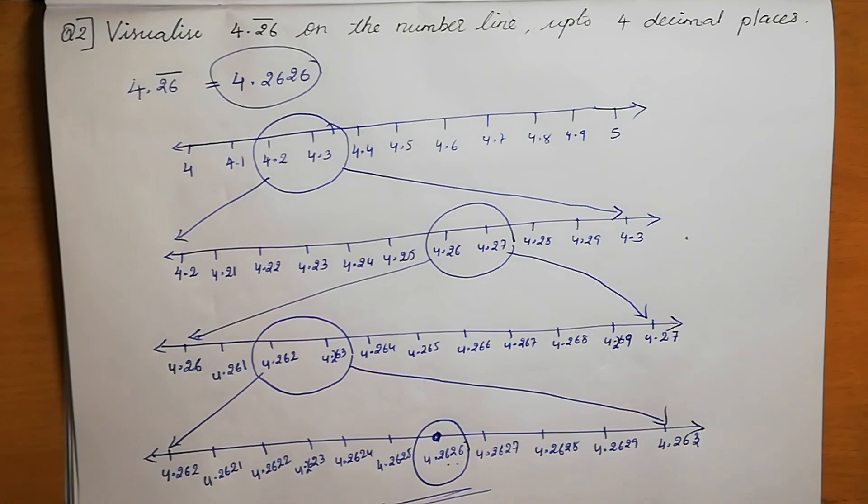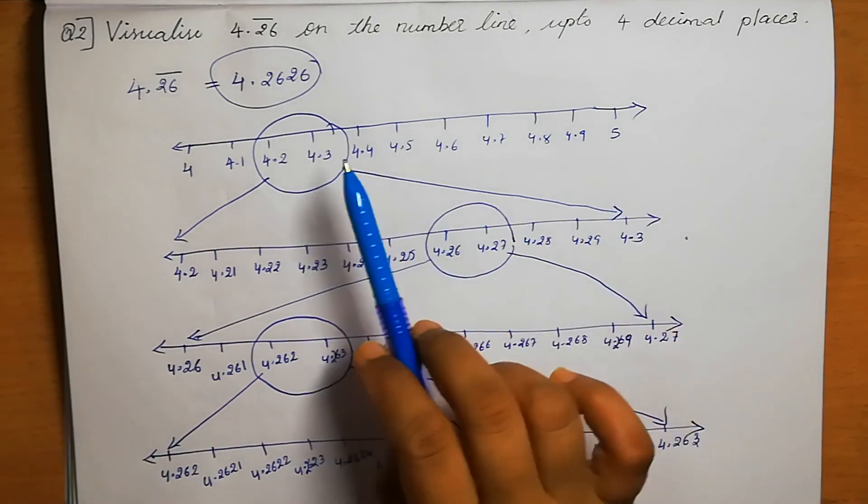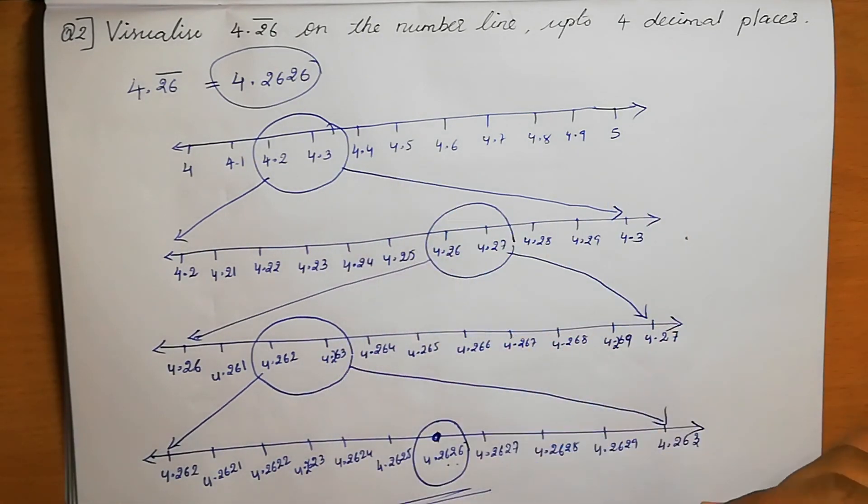Exactly we get 4.2626 on the number line. This is the answer — the representation and visualization of 4.2626 on the number line.